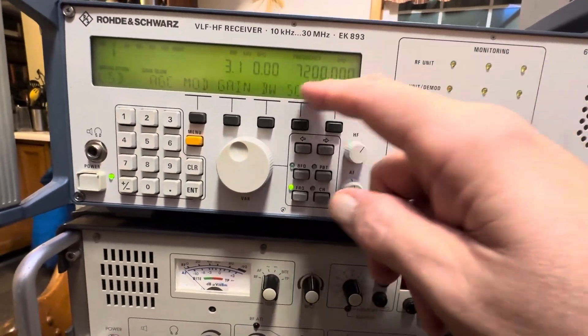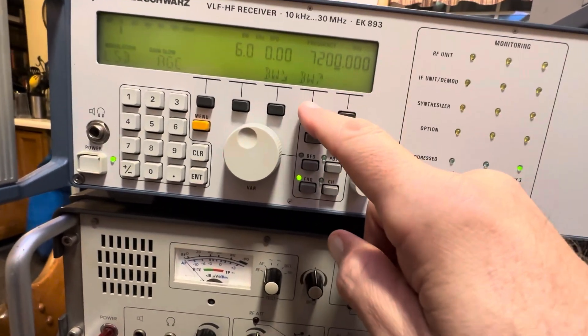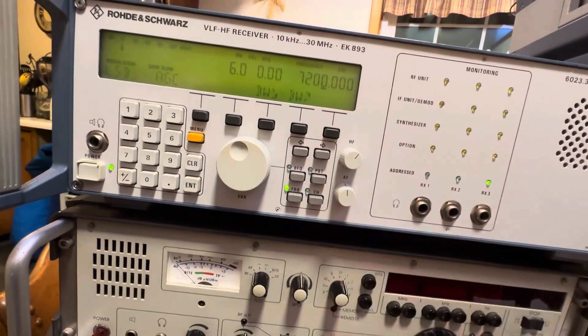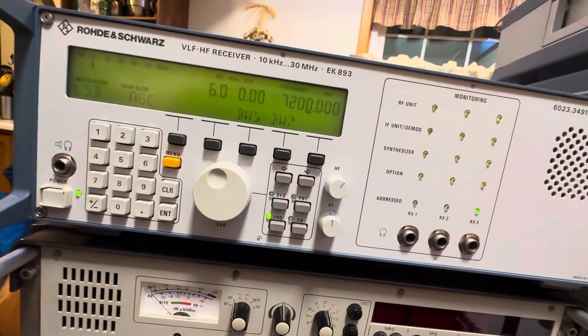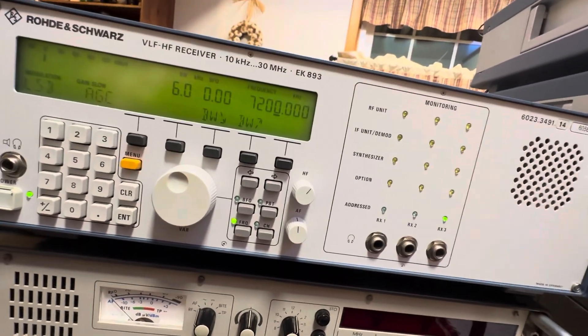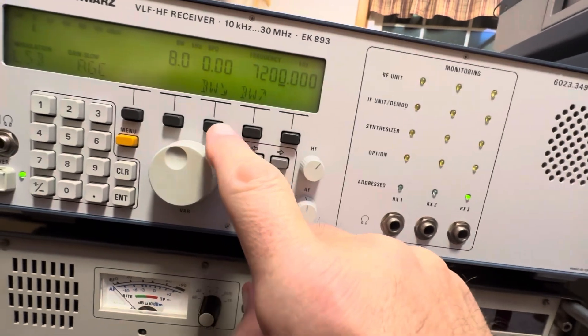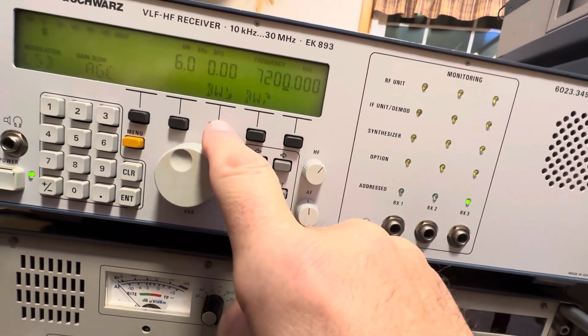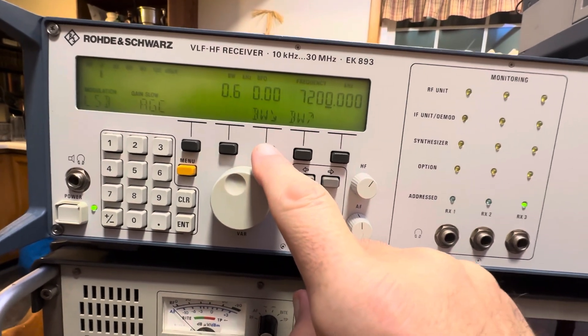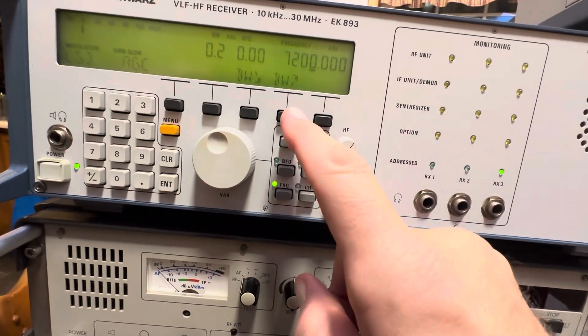I'm not going to go through all the menu controls. There are bandwidth controls you can bring up or down. There are a total of six different bandwidths in this. You have everywhere from 8 kilohertz, 6, 3.1, 1.5, 0.6, and 0.2. 200 hertz is the smallest filter there.